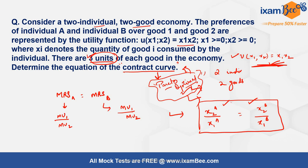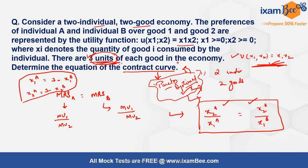Setting these MRS values equal gives the contract curve points. Because there are three units of each commodity, the binding constraints are: x1a = 3 − x1b, and x2a = 3 − x2b.